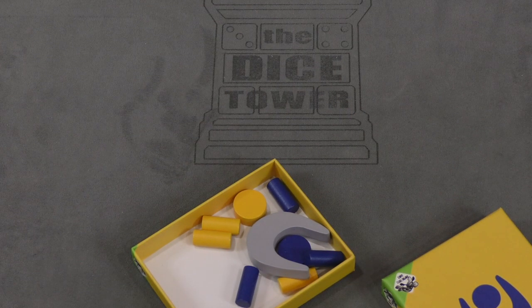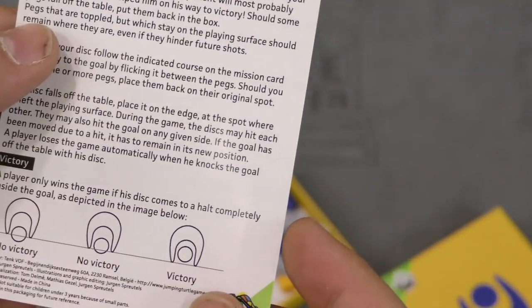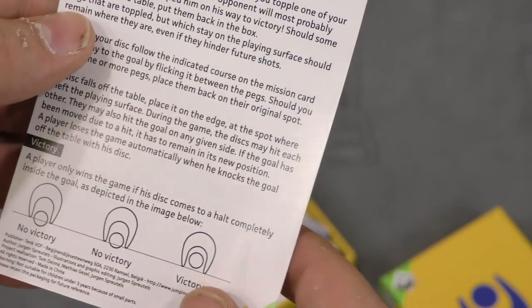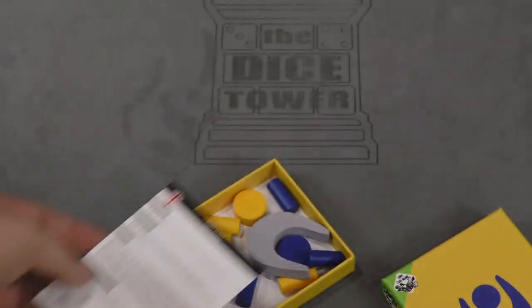Let's take a look at the rules. The rules are a single sheet of paper. You're flicking it, trying to get it into the goal. They're selling this? Whatever.